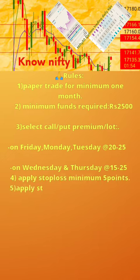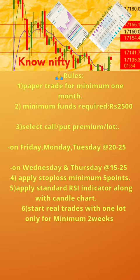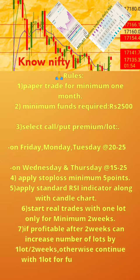4. Apply stop loss minimum 5 points. 5. Apply standard RSI indicator along with candle chart. 6. Start real trades with one lot only for a minimum of 2 weeks. 7. If profitable after 2 weeks, can increase number of lots by 1 lot for 2 weeks; otherwise continue with one lot for further 2 weeks.